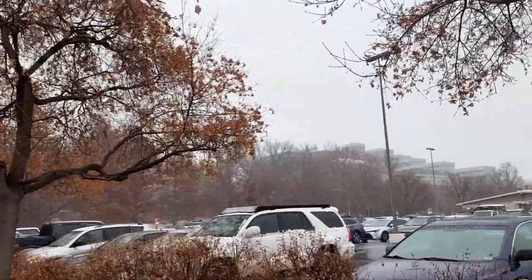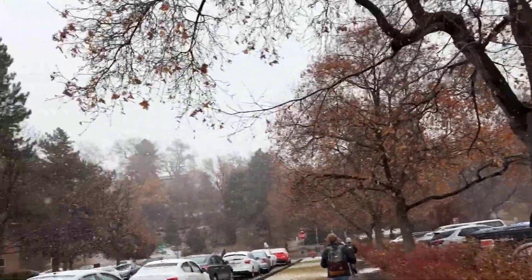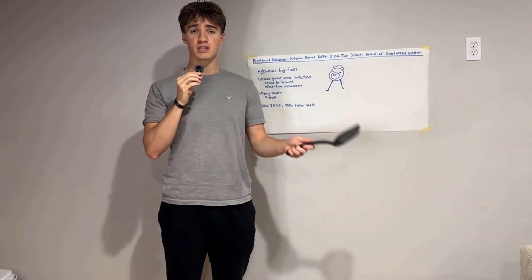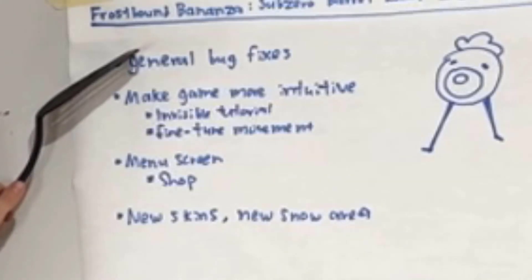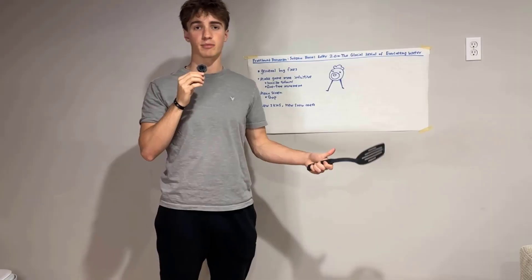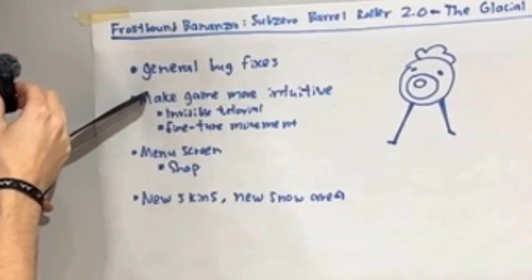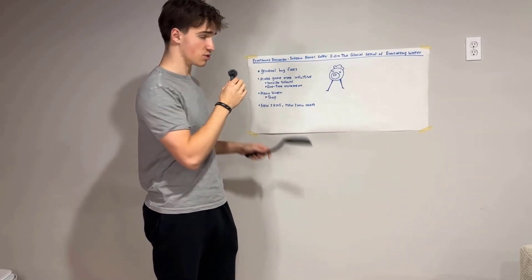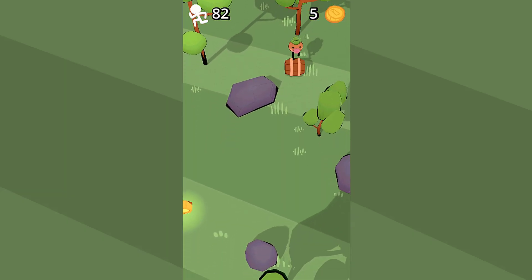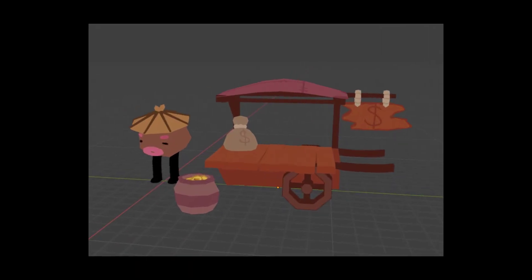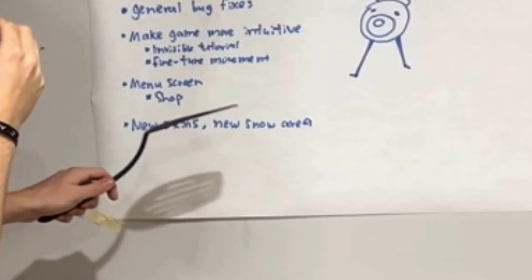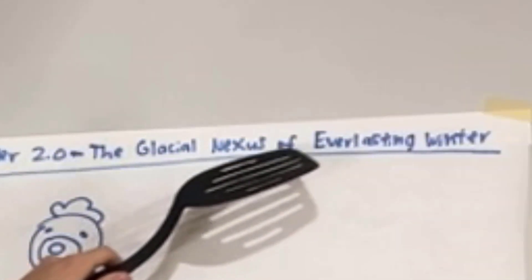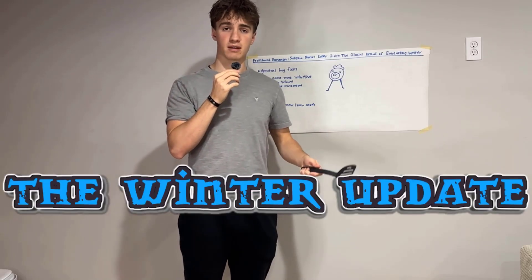Over the next few weeks, Adam and I decided we wanted to reduce the scope of the update and just focus on making one winter level — a good, focused update. So in review, the update will include general bug fixes like fixing lag spikes and better collisions, an invisible tutorial where obstacles ramp up in difficulty over time, fine-tuned movement and collisions, a menu screen with a shop where you can finally use your coins to buy new skins, and a new snow area. We've decided to name this update the Frostbound Bonanza Sub-Zero Barrel Roller 2.0, the Glacial Nexus of Everlasting Winter — or the winter update for short.